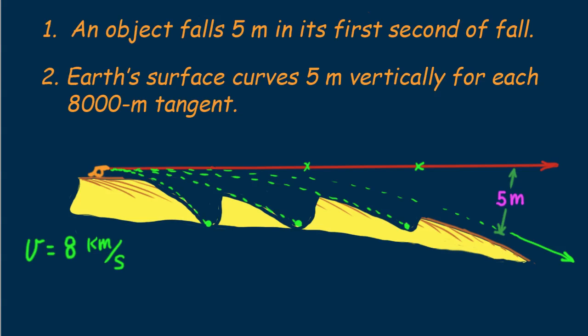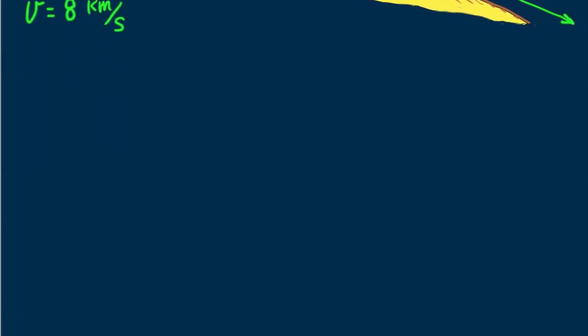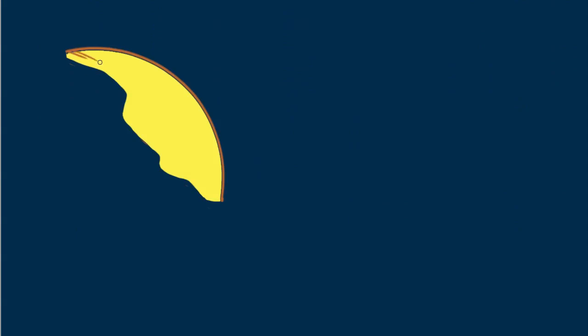So it would repeat falling beneath a new tangent every second. Unless some force interrupts it, it would fall indefinitely. It would be an Earth satellite.